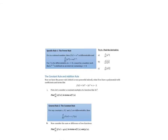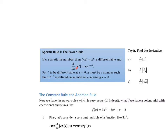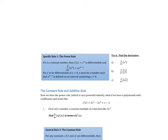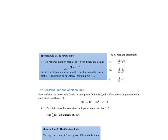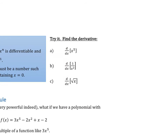We've got our power rule — our first power tool. The power rule says: if we have x to the n, to find the derivative, we drop the n down in front and subtract one from the exponent. That gives us n times x to the n minus one. The function must be differentiable, and n must be a number so we can compute n minus one.